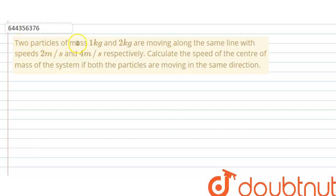Two particles of mass 1 kg and 2 kg are moving along the same line with speeds 2 meter per second and 4 meter per second respectively. Calculate the speed of center of mass of the system if both the particles are moving in the same direction.